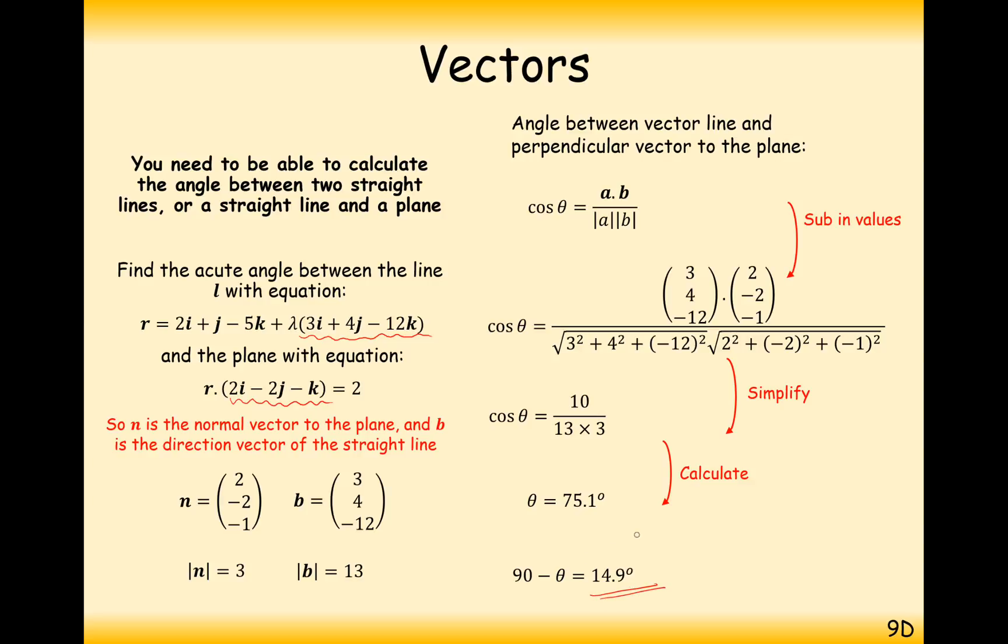So, 14.9 is the angle between the line and the plane. So, it's basically the same sort of question as find the angle between two lines. You've just got a final extra little calculation at the end, which is 90 minus it.